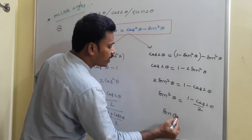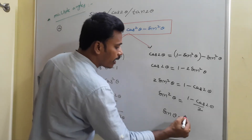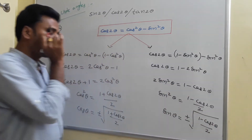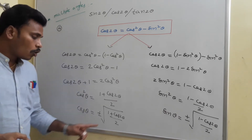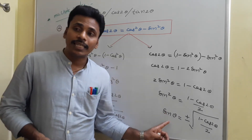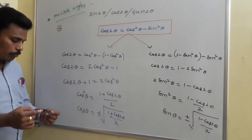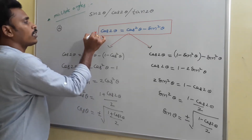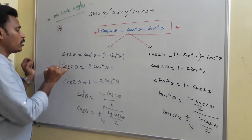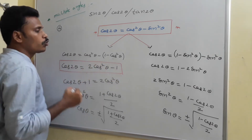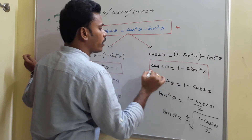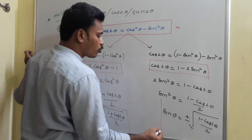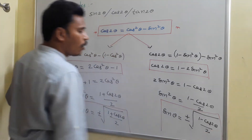From cos 2 theta equals 1 minus 2 sine squared theta, we get 2 sine squared theta equals 1 minus cos 2 theta, and sine squared theta equals (1 minus cos 2 theta) divided by 2. At the end, sine theta equals plus or minus the square root of (1 minus cos 2 theta) divided by 2. Both the cosine and sine formulas look similar and are very useful. You need to memorize: cos 2 theta equals cos squared theta minus sine squared theta, cos 2 theta equals 2 cos squared theta minus 1, and cos 2 theta equals 1 minus 2 sine squared theta.